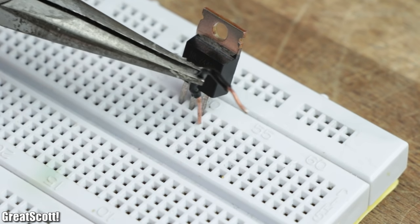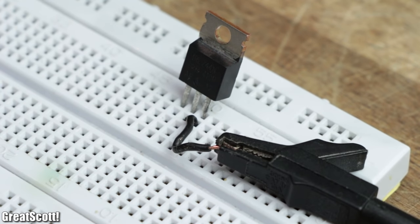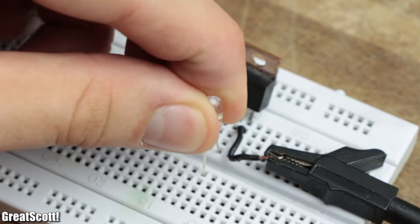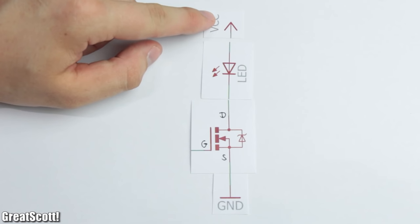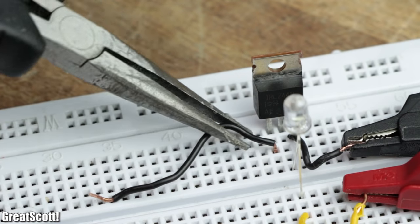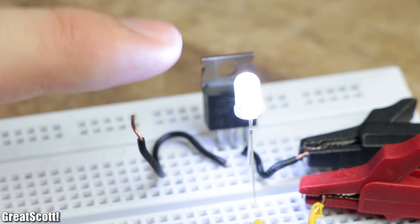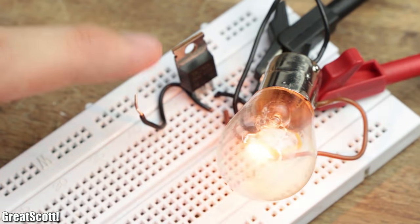But before going too much into the theory, let's build up the circuit by connecting the source directly to ground, the cathode of my LED to the drain, and the anode to the supply voltage. But one problem that was immediately noticeable was that even electrostatic voltages of my body can turn on the load, even big ones like this light bulb.